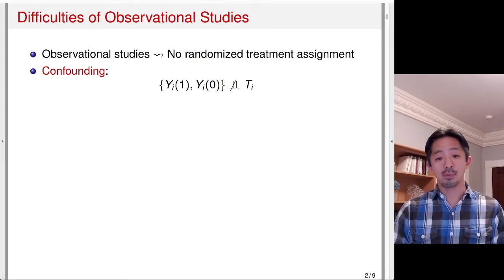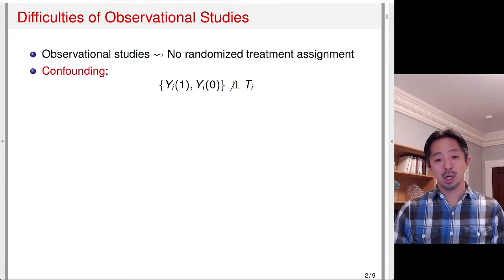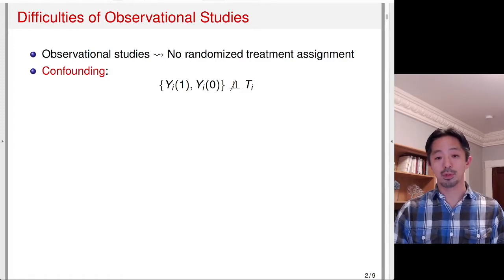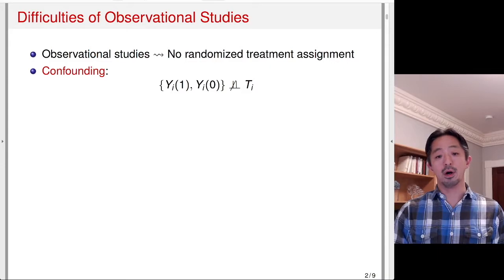Confounding implies that the treatment is not independent of potential outcomes. So we cannot simply compare the treatment group and control group and compute the difference in means to estimate the average treatment effect. Confounding means the treatment is no longer independent of the potential outcomes.